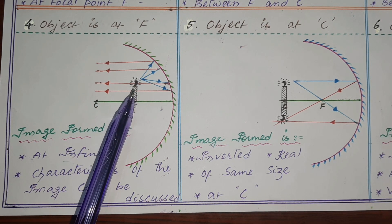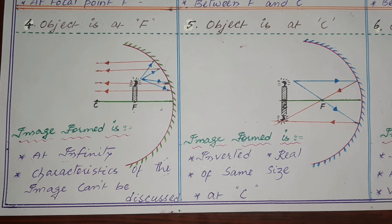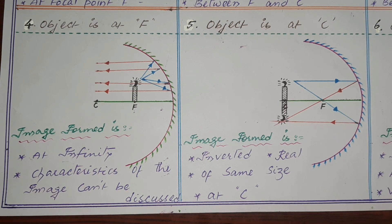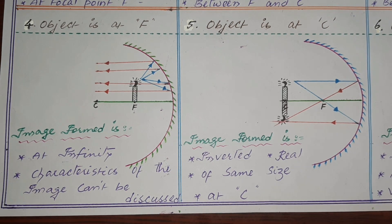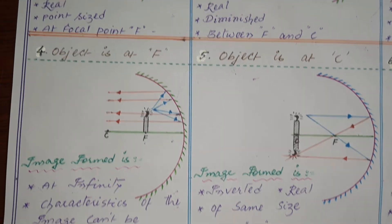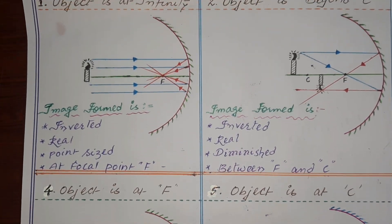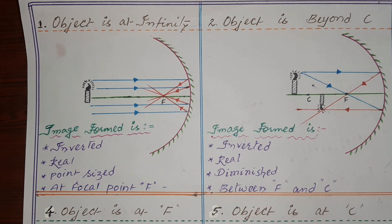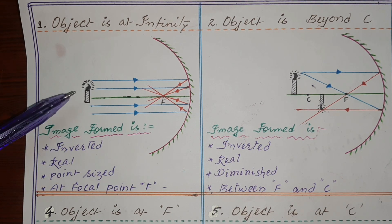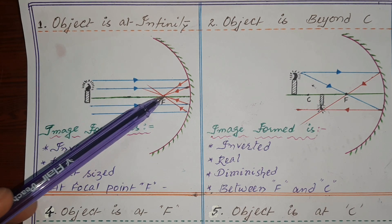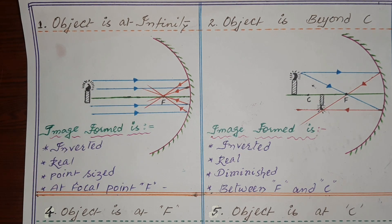In this ray diagram, remember one thing: the object is kept at the focal point and the image is formed at infinity. This is the reverse case of the first case — in the first case, the object was at infinity and the image formed at the focal point.